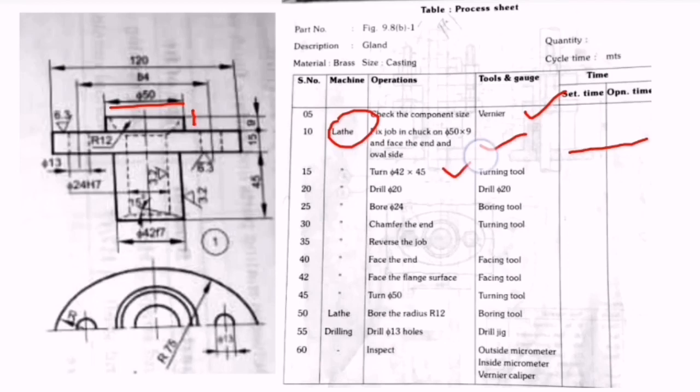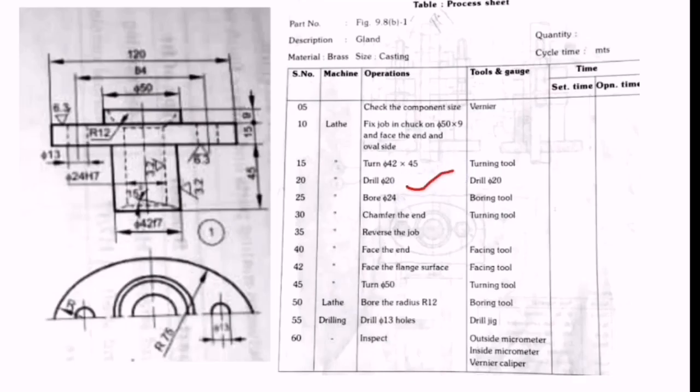Next is turning of 42 by 45 - this is the 42 diameter and this is 45. Then drilling of 20 diameter and boring of 24 diameter, using drill bit for drilling and boring tool for boring.